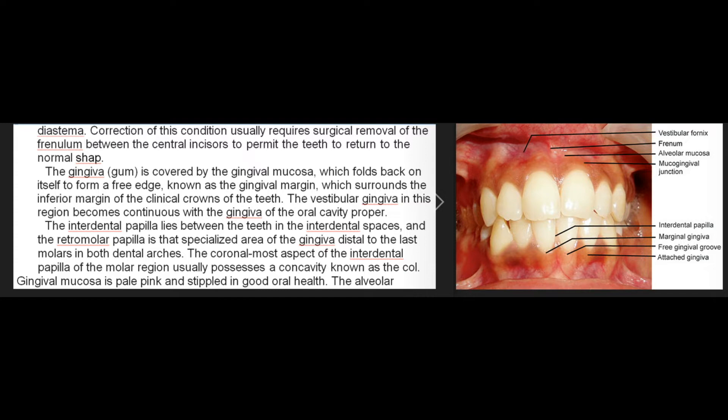The vestibular gingiva becomes continuous with the gingiva of the oral cavity proper. The interdental papilla lies between the teeth in the interdental spaces, and the retromolar papilla is that specialized area of the gingiva distal to the last molars in both dental arches. The coronal-most aspect of the interdental papilla of the molar region usually possesses a concavity known as the col. Gingival mucosa is pale pink and stippled in good oral health.